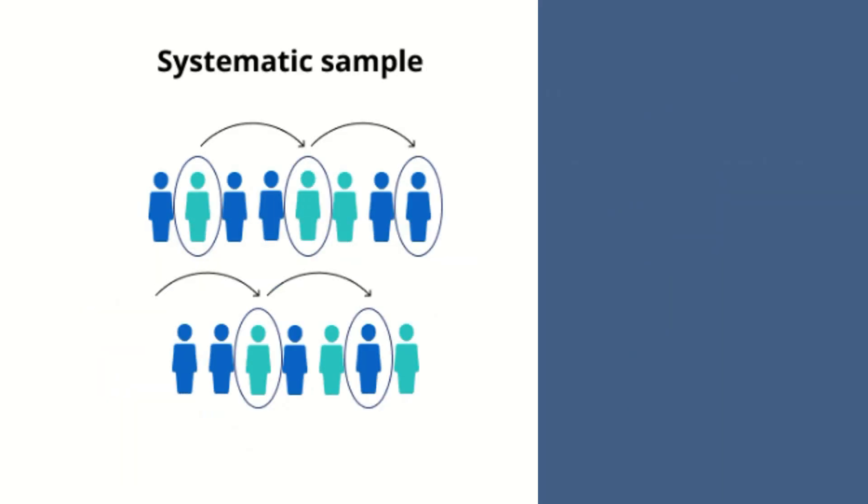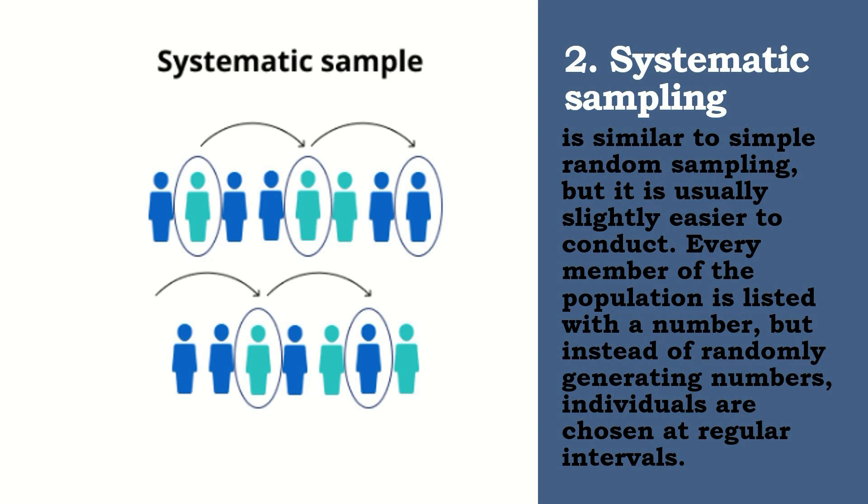The next type of probability sampling is the systematic sampling. When we say systematic sampling, it is also similar to random sampling in the sense that every member of the population is listed with a number. Pero, mas madali ito. It is usually slightly easier to conduct because instead of randomly generating numbers, individuals are chosen at regular intervals.